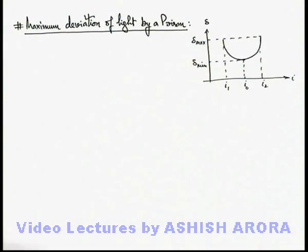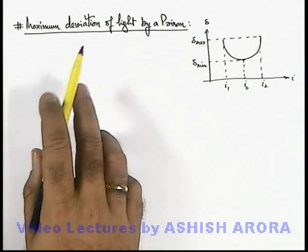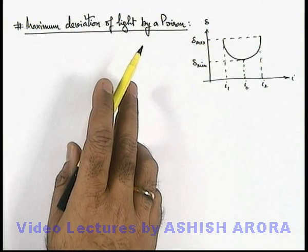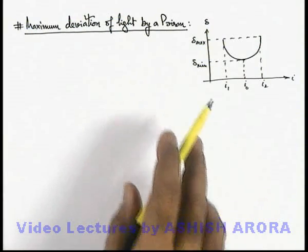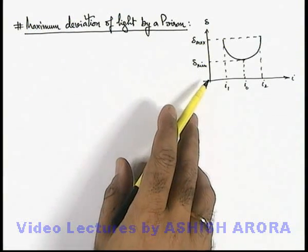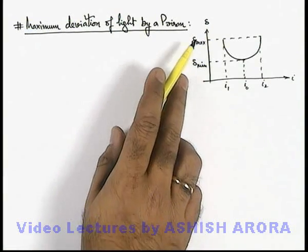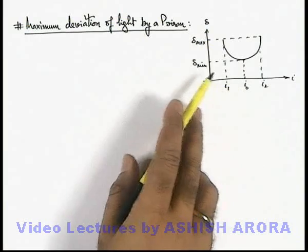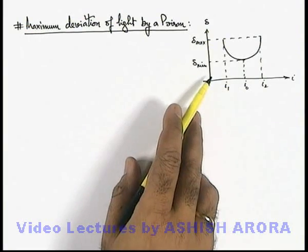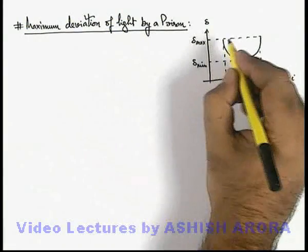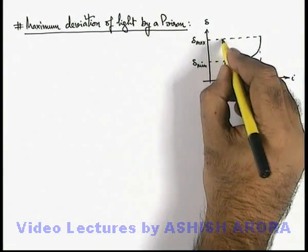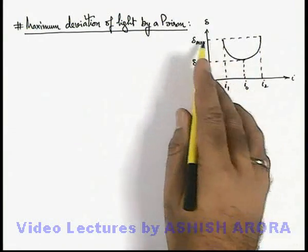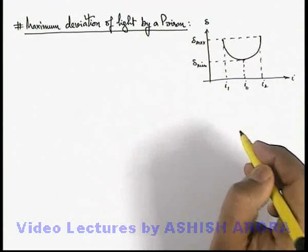Let us now study about the maximum deviation of light by a prism. This variation curve of deviation angle with incidence angle we have already studied. Here we can see that there are 2 situations under which the deviation angle is maximum.